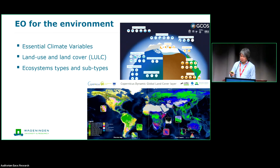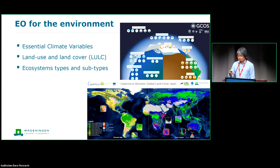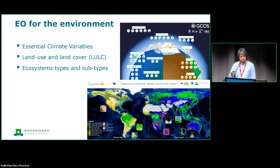Talking about the environment specifically, there are quite a few satellites producing datasets used to create maps of environmental variables. There's a list of Essential Climate Variables, which are literally very important for climate and system modeling — the biomass map I showed earlier is one of them. We're also aware of a lot of global land use and land cover products now at resolutions as high as 10 meters and temporal resolution of at least one month. Ecosystem types and subtypes can also be mapped from EO.